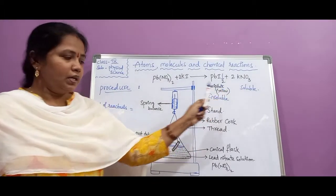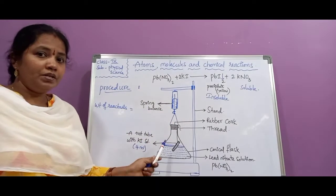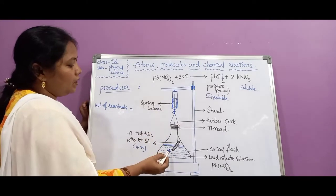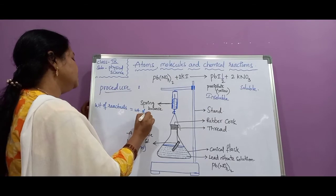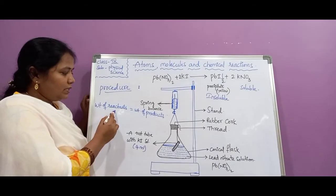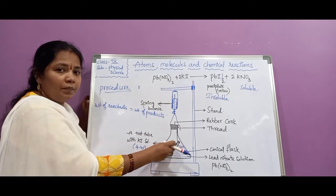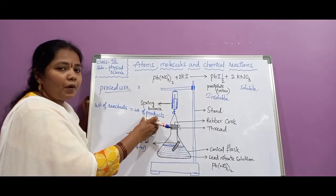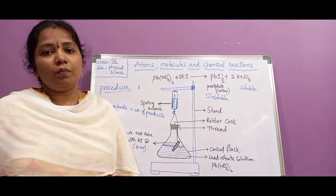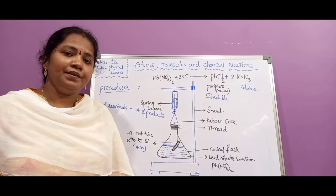After the products are formed, take the conical flask again and hang it on the spring balance to measure the weight of the products. You will find that the weight of the reactants is equal to the weight of the products. Total mass of the reactants is equal to total mass of the products, thereby proving that the law of conservation of mass is verified and correct.